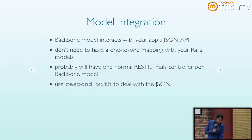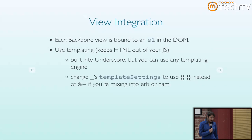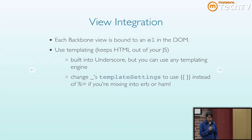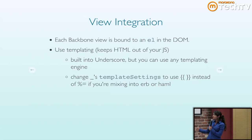Each Backbone view is bound to an element in the DOM, and you should use some sort of templating engine. Backbone comes with Underscore's templating, so that's a handy thing to use. The one gotcha you might want to deal with is if you're mixing your Rails templates with your Backbone templates in one file — you want to change the variable indicator, because Haml also uses percent-equals to denote Ruby code.